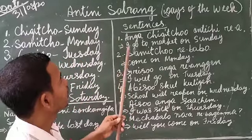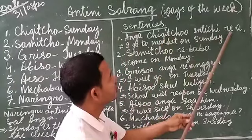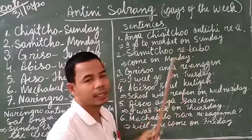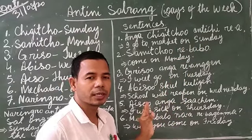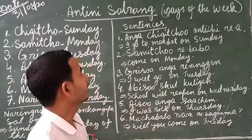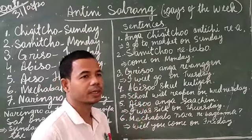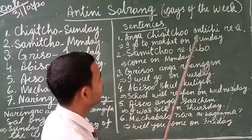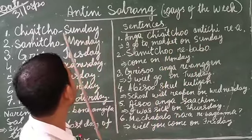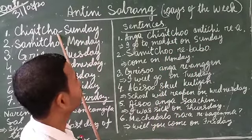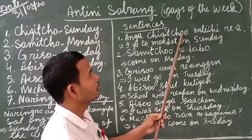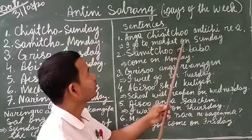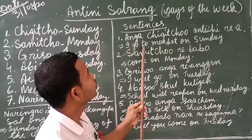Now you see number one sentence: anga shigucho antichi rea. This is the meaning — I go to market on Sunday. This is a short sentence taken from Sunday. Anga means I, shigucho means on Sunday. You can see here only single O, but here double O — that double O means 'on.' So shigucho with double O means 'on Sunday.' Antichi means to market.